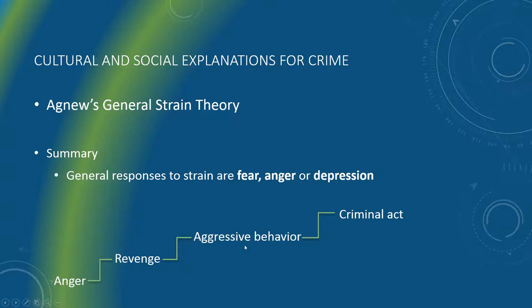This is where we left off last time, kind of summarizing Agnew's strain theory — basically saying that anger led to revenge, aggressive behavior, and ultimately criminal behavior or criminal act.